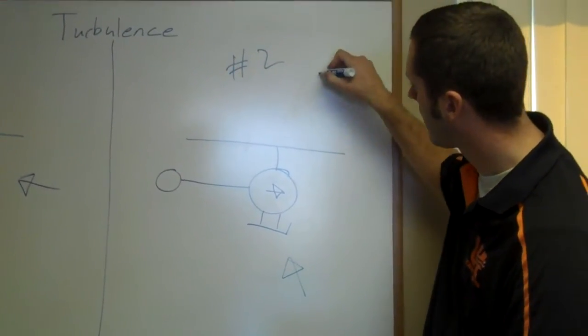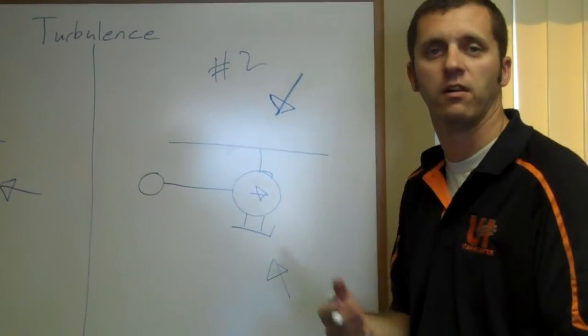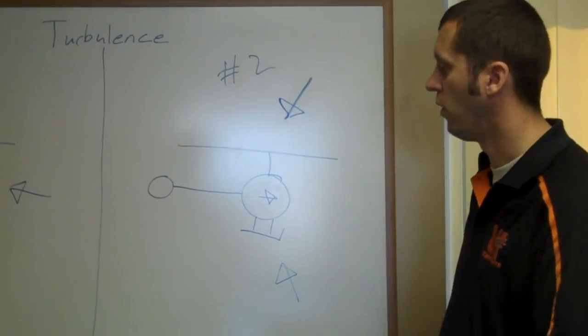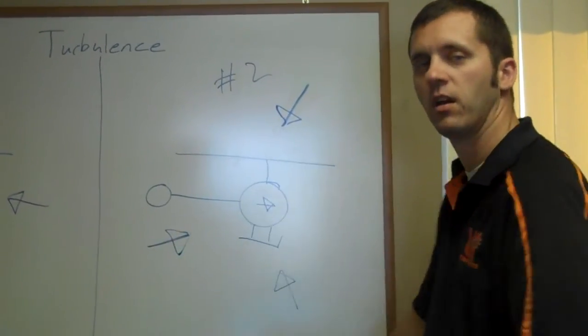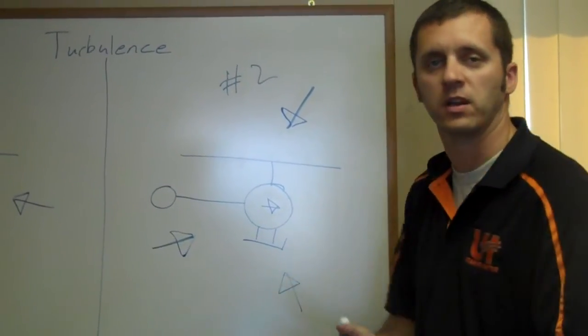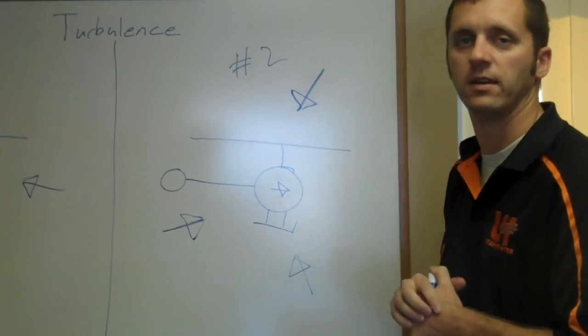Maybe it can experience something from a downdraft on the leeward side of a mountain, wave turbulence, or a sudden wind shear change in direction, more from an aft perspective. All these can cause our helicopter to not have a smooth flight.